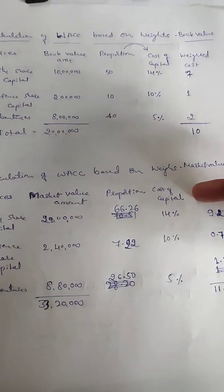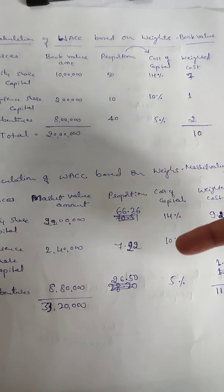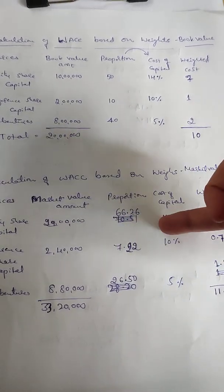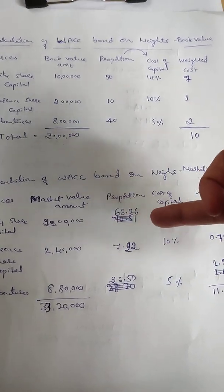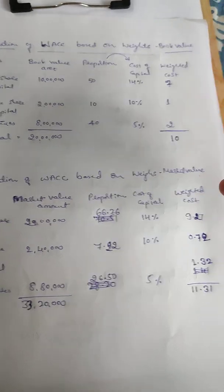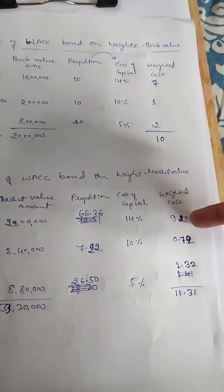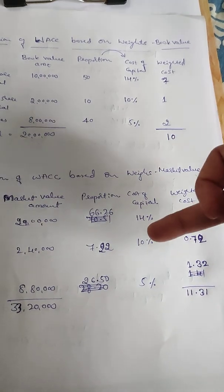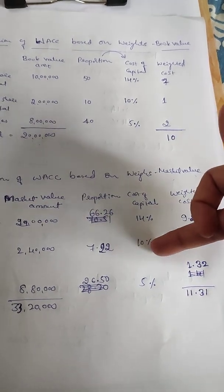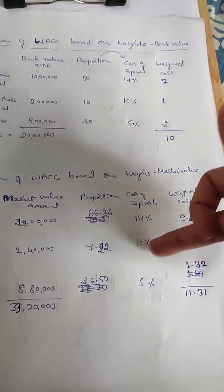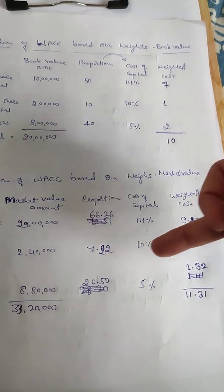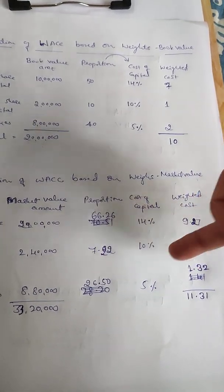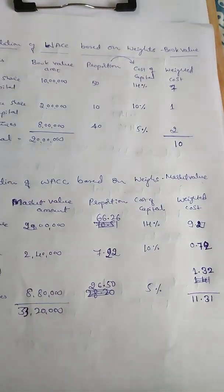So with cost of capital percentages of 14%, 10%, and 5% respectively: 66.26 multiplied by 14% gives 9.27 as the weighted cost. 7.22 multiplied by 10% cost of capital gives 0.72. And 26.5 multiplied by 5% gives 1.3 as the weighted cost for debentures.